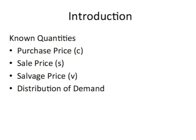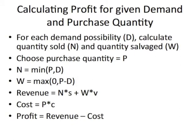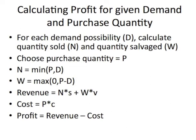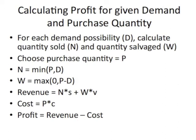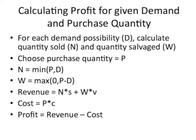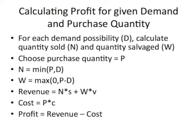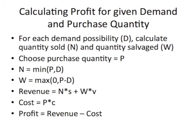The distribution of demand is the probability of each demand level being the actual demand in the market. We deal with calculating profit for a given demand and purchase quantity. We choose a purchase quantity within the range of the given demand. Quantity sold is the minimum of quantity demanded and purchase quantity. Quantity salvaged is the maximum of zero and the difference between purchase quantity and quantity demanded. Revenue is calculated by multiplying quantity sold by the sale price plus quantity salvaged by the salvage price. Cost is the purchase quantity times the purchase cost, and profit at each demand is revenue minus cost.